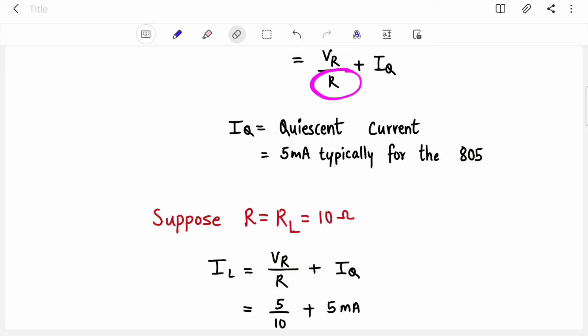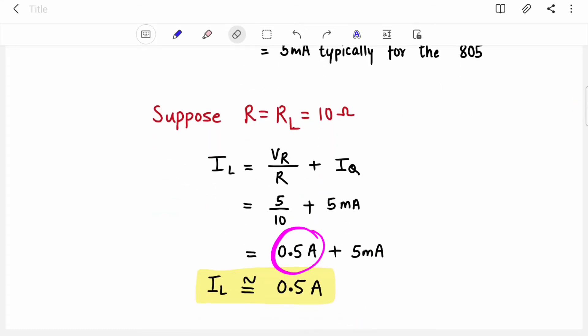So we are taking 10 ohms here. So VR is 5 volt, R we assumed 10 ohms, and this quiescent current is 5 milliampere. Now you can see that this current is in ampere and this is in milliampere. So you can ignore this 5 milliampere because it is very small quantity. So your IL load current will be 0.5 ampere.